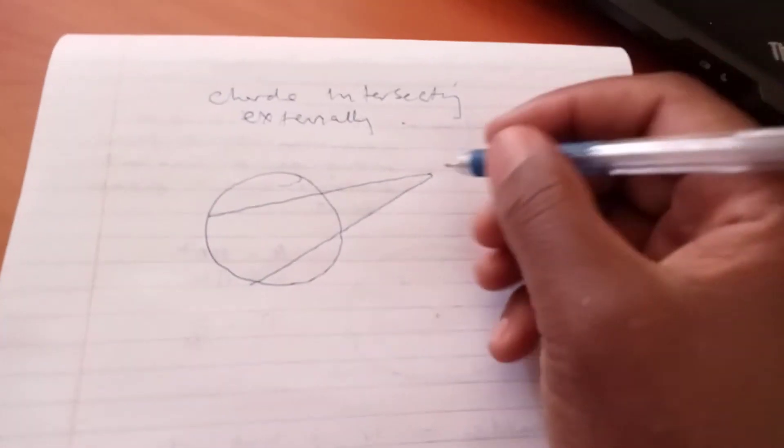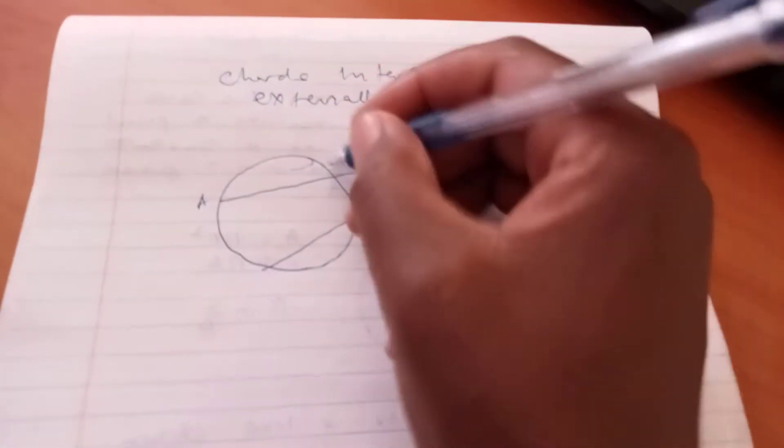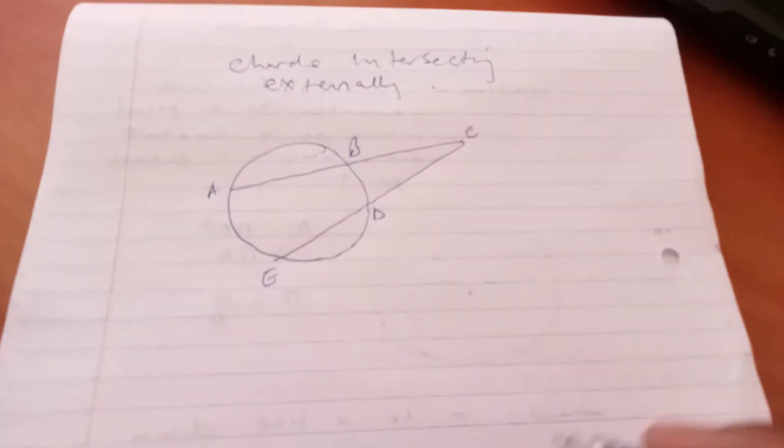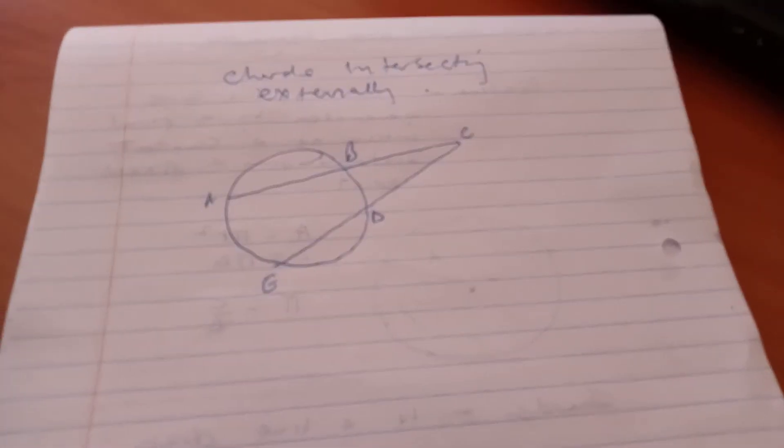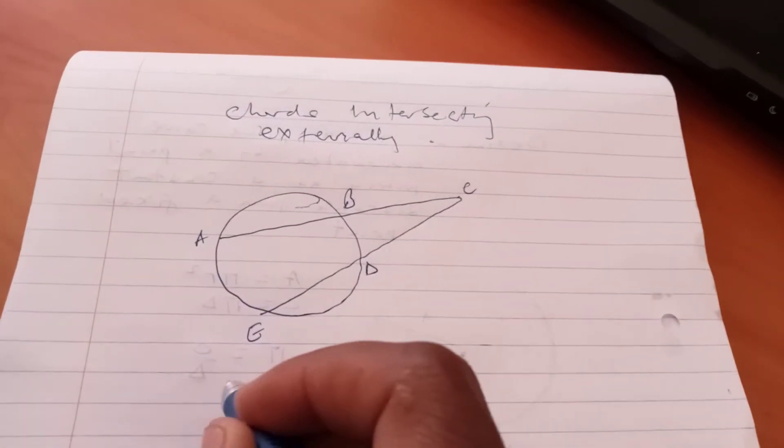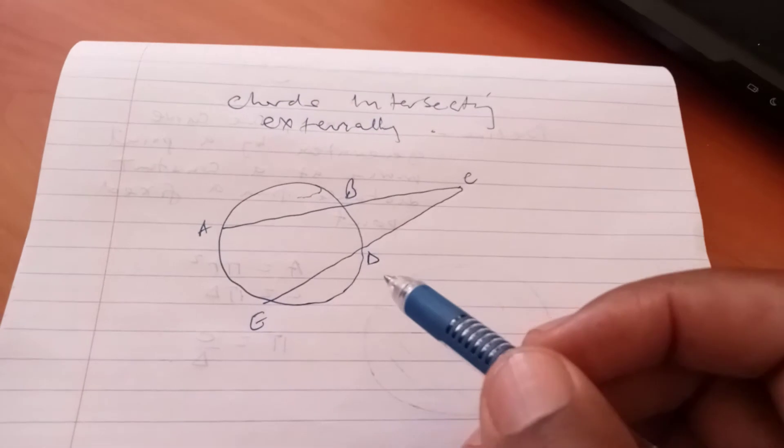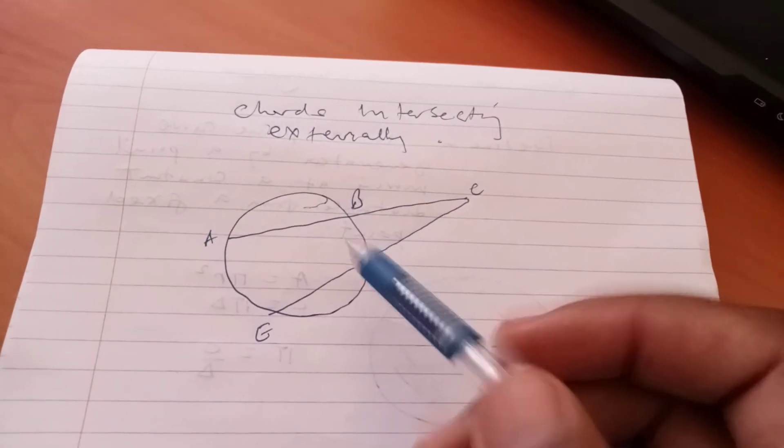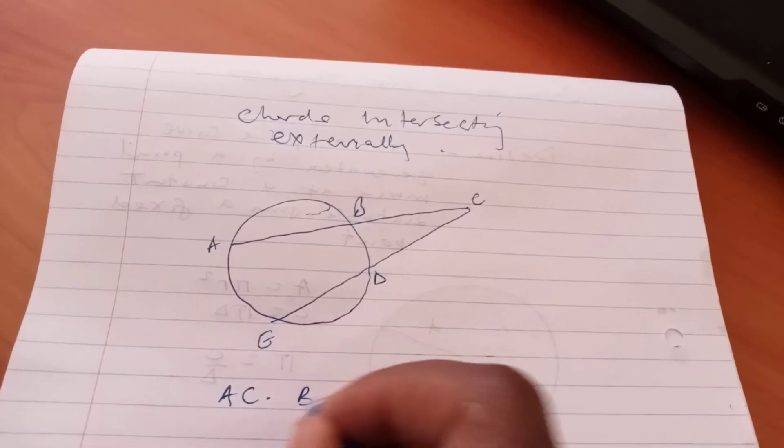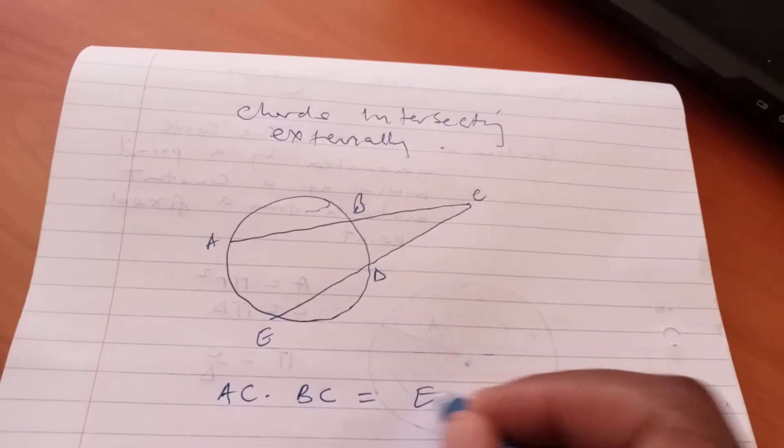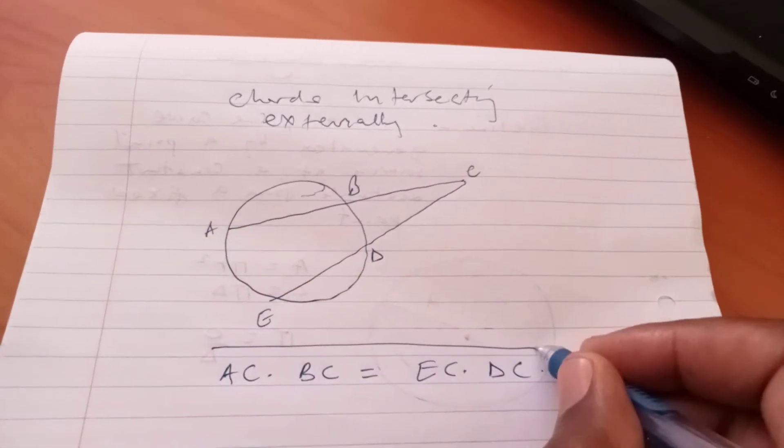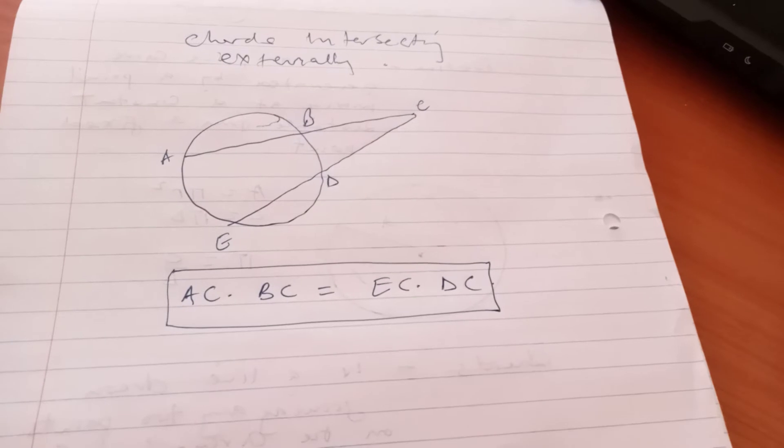And let me call this one A, B, C, D, and E. So a situation like this can be viewed as when you want to determine any of the unknowns, you can use this relationship. We have AC times BC equals EC times DC. That is a very important relationship which you can use.